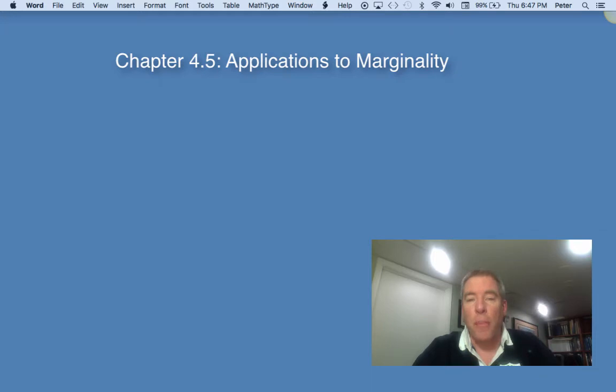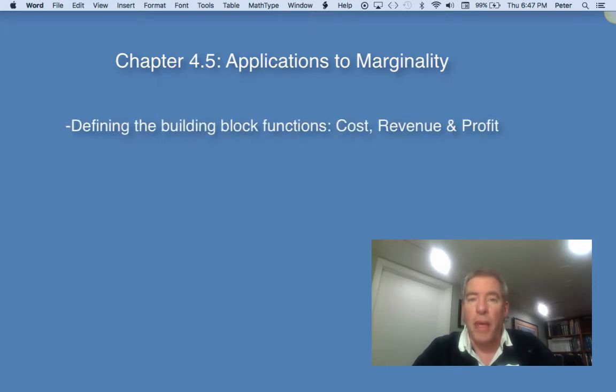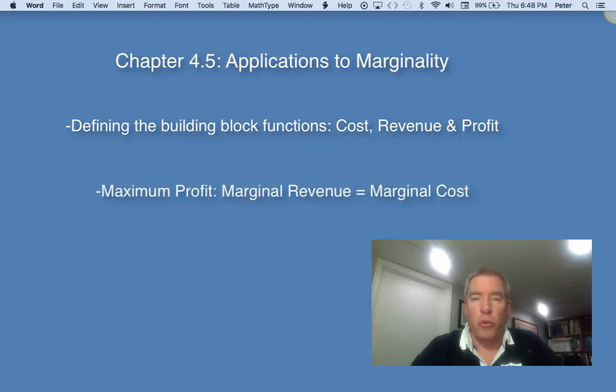We're going to start out by defining some of the basic building block functions of economics, which will be the cost function, the revenue function, and the profit function. And then we'll try to see how calculus can be used to figuring out how to maximize profit because that's what almost all businesses want to do. We're going to find that that occurs when the marginal revenue is equal to the marginal cost.